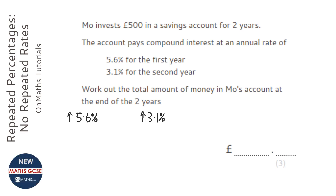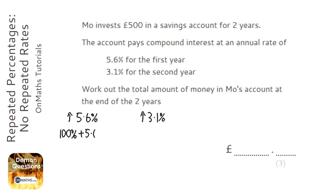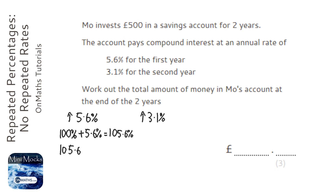To use the multiplier method, you always start off with 100%. You do what it's saying — so if it's adding 5.6%, we add 5.6%, which gives us 105.6%. Then you make that a multiplier by dividing it by 100. A multiplier is just a posh way of saying decimal — so that's 1.056.